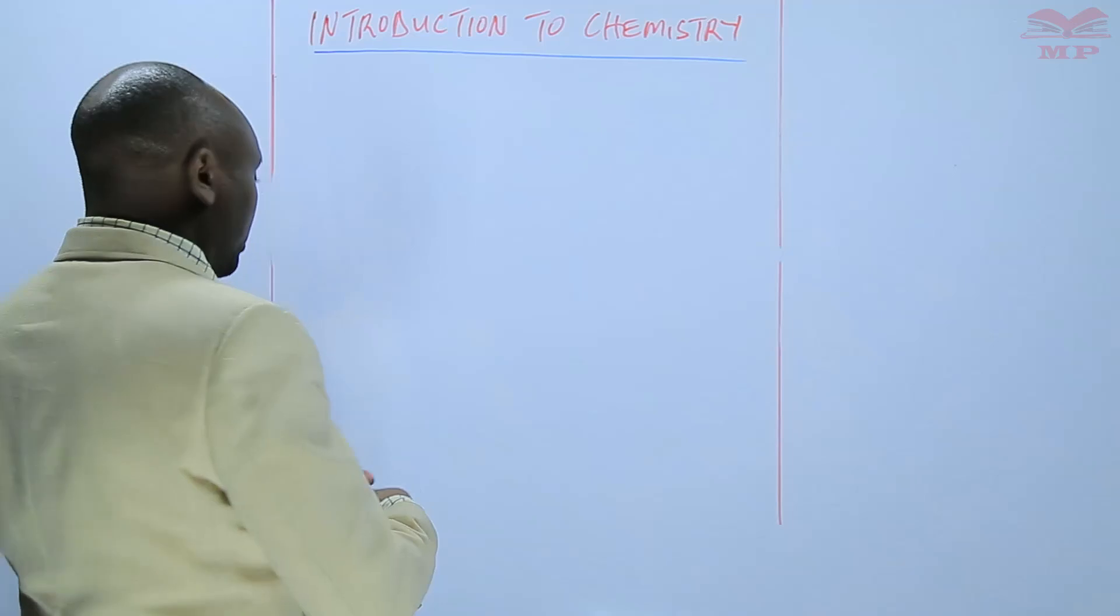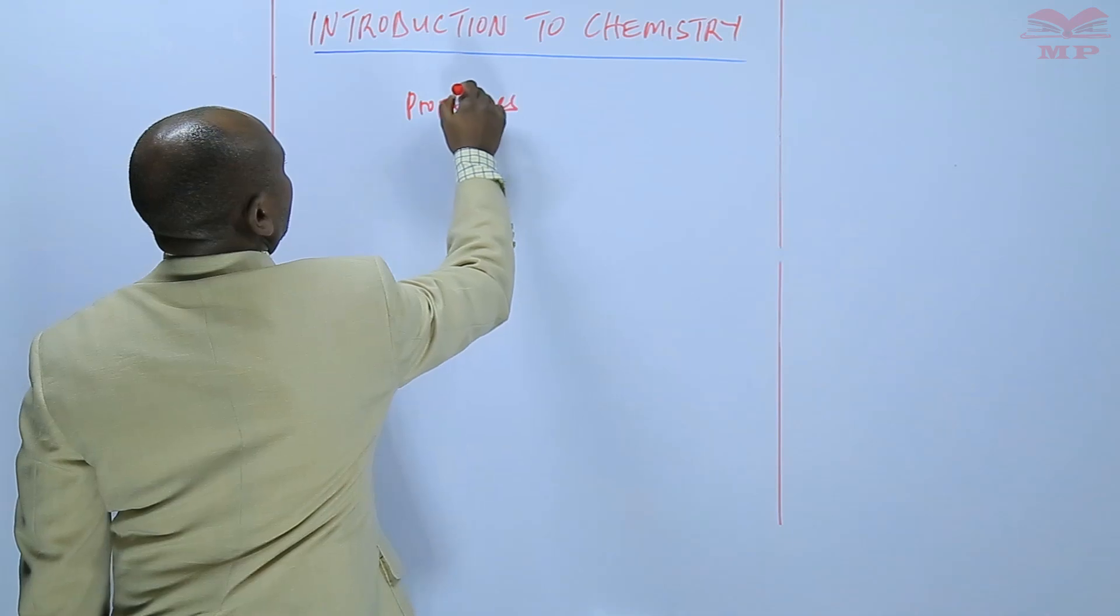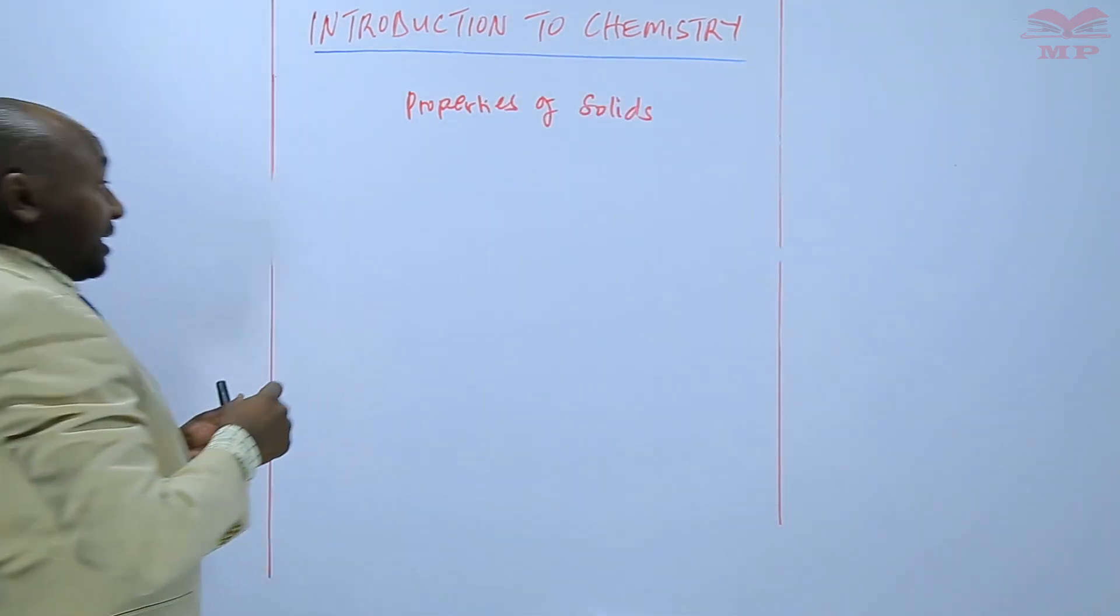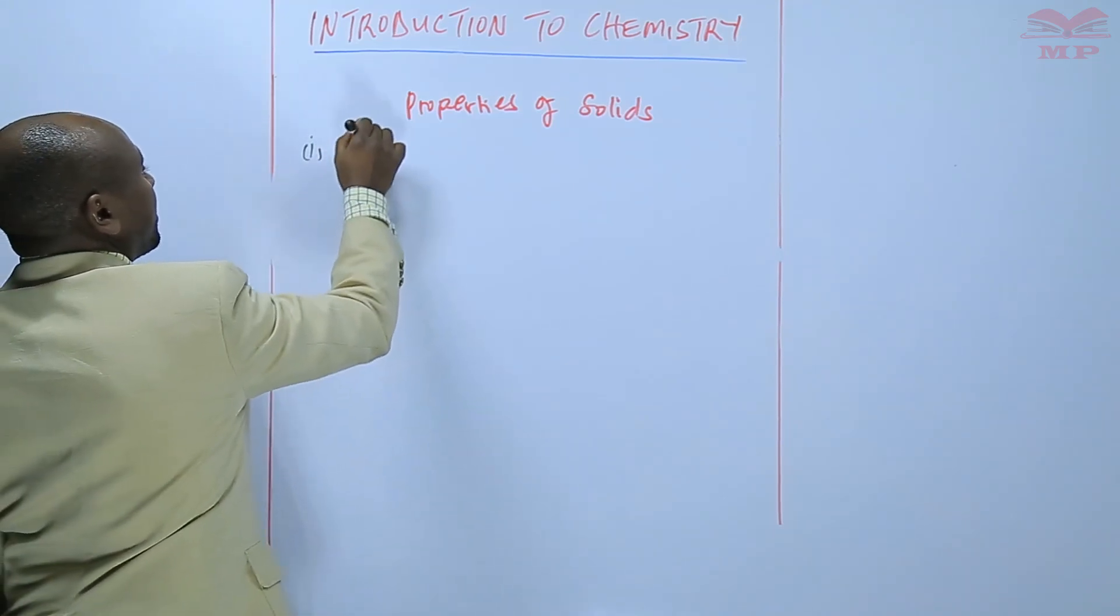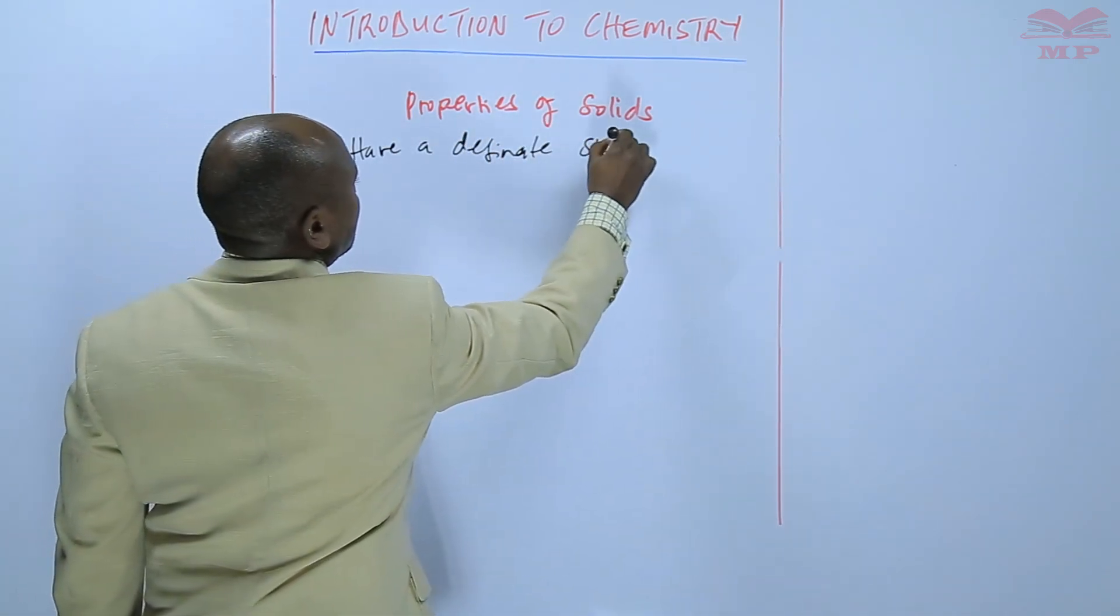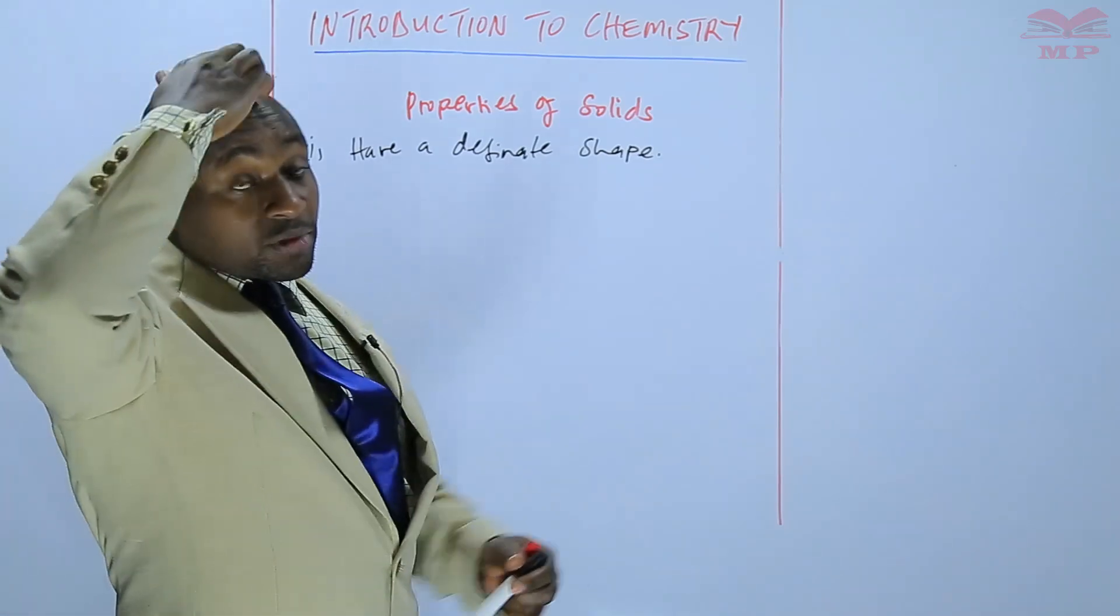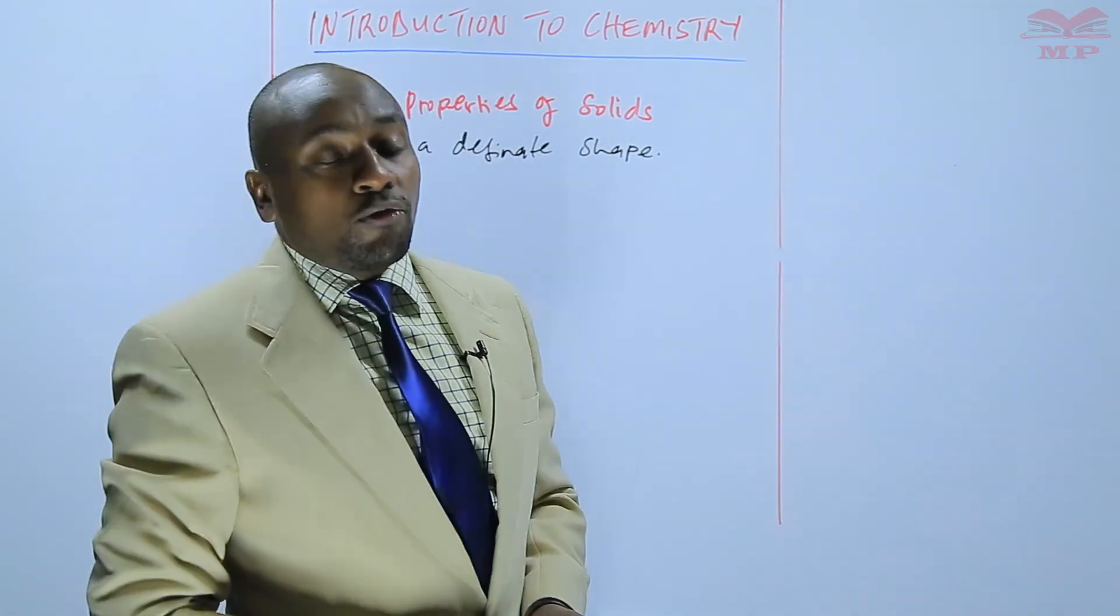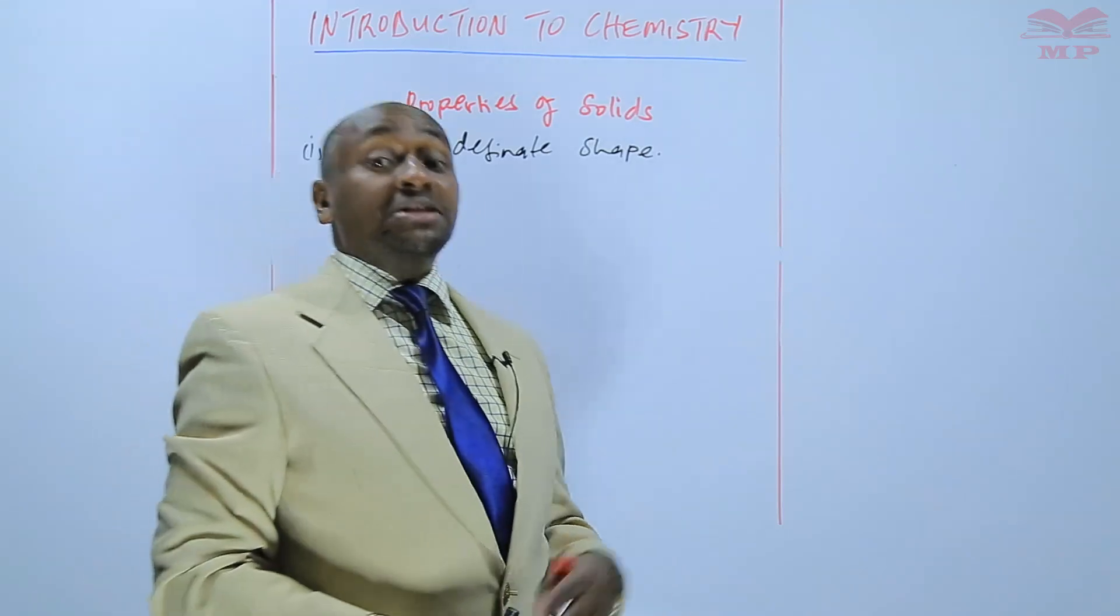So I'd like us to start with the properties of solids. One thing about solids is that they have a definite shape. And on this, we can say that this solid is rectangular in shape, it's oval in shape, or whichever the shape, it can also be an irregular shape.